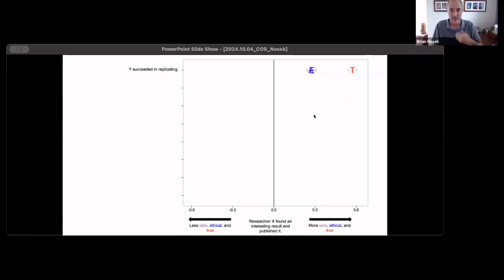Then you see a similar thing in reverse. Researcher Y fails to replicate researcher X's finding. Now survey respondents perceive that researcher, the original researcher, to be slightly less ethical, maybe not as good at their research, and the finding that they had originally is maybe not true.